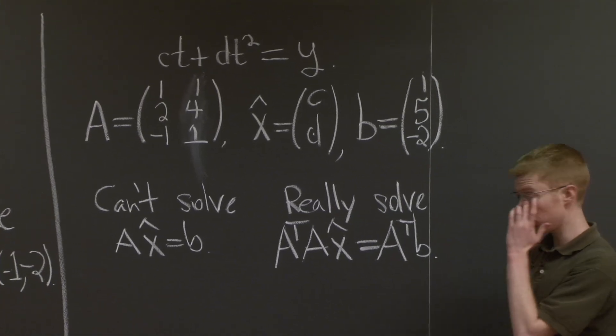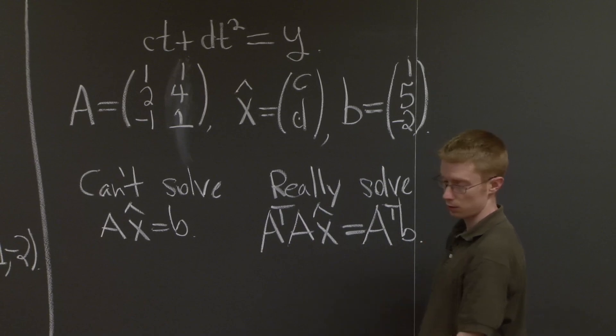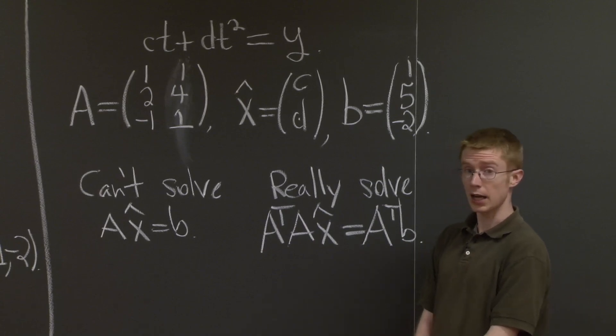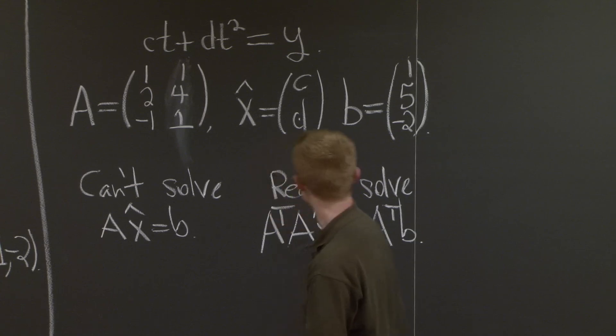So that's what we're really going to do. We're really going to solve A^T A x̂ = A^T b. And now all we have to do is just a computation. So let's do it.